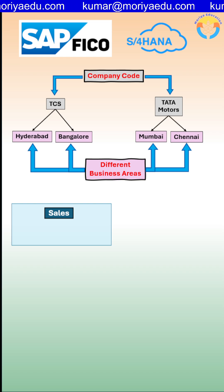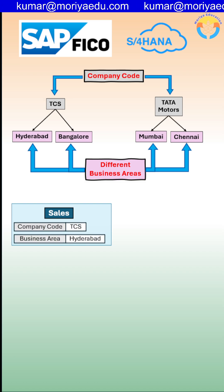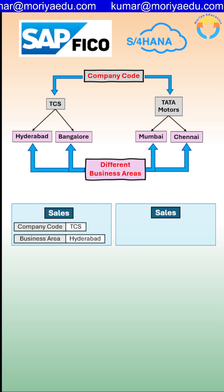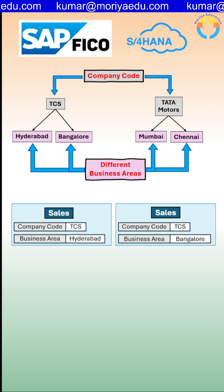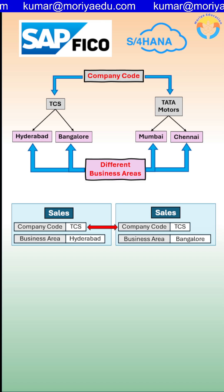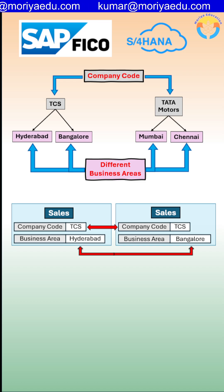For example, if sales occurs in TCS at Hyderabad, the business area will be Hyderabad. And if sales occurs at the Bangalore branch in TCS, the business area will be Bangalore. So here, the company code is the same — that is TCS — but the business area is different: Hyderabad and Bangalore.